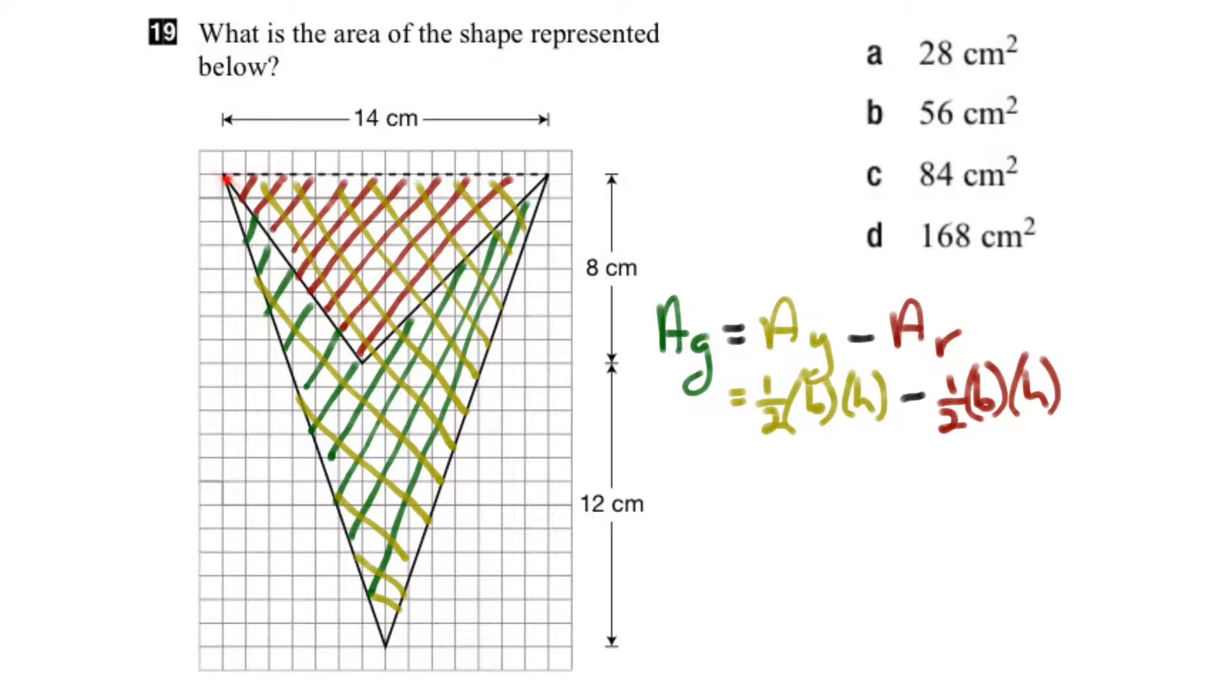If we're looking at the big triangle here, the yellow part, the base is 14 cm long, and the height is 8 plus 12 or 20 cm high. So this becomes half times 14 times 20, and that is the area of the yellow part.